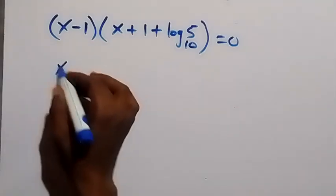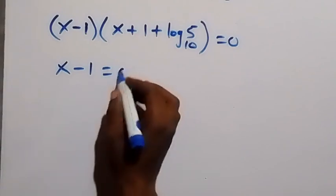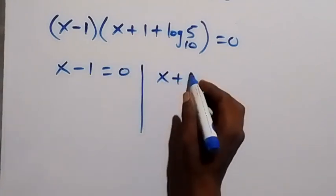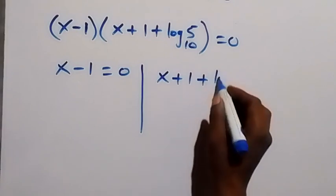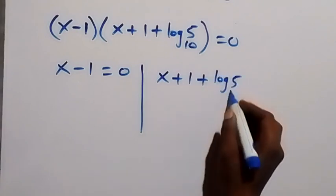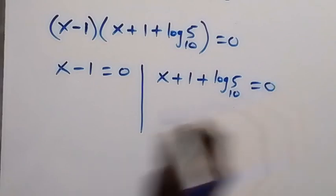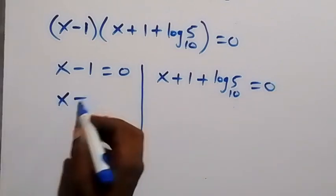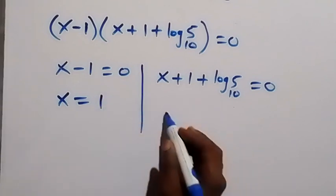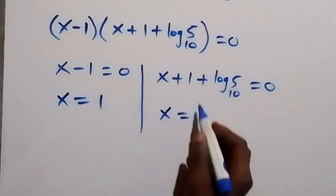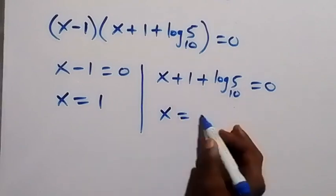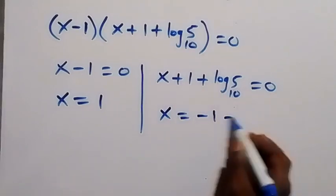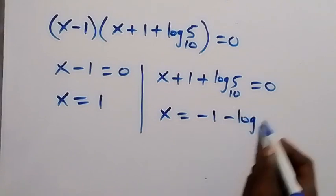From here we have two possible cases. First case: x minus 1 equals 0, giving x equals 1. Second case: x plus 1 plus log 5 base 10 equals 0, giving x equals negative 1 minus log 5 base 10.